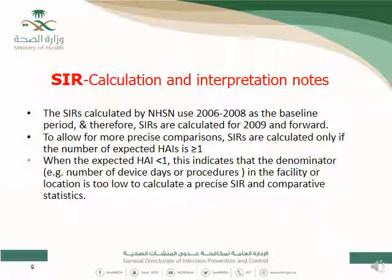The SIR calculated by NHSN has used different baselines over time: 2006–2008, then 2009, and currently 2019. The baseline can be changed. For example, if you have a 5-year plan to reduce CLABSI, you use the rate before that 5-year period as your baseline throughout it. After those 5 years end, you can use that period's average as the baseline for the next plan. During any specified period, you should use the same baseline consistently.